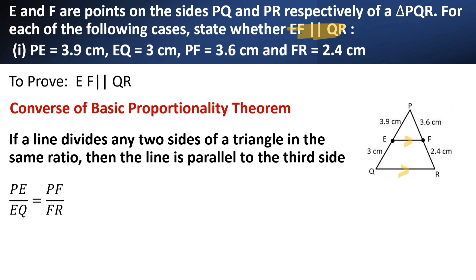So now let us find LHS. What is LHS here? PE is equal to 3.9, EQ is equal to 3. No need to remove the decimal place. It is very easy problem. 1.3.